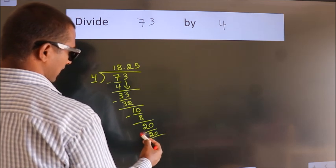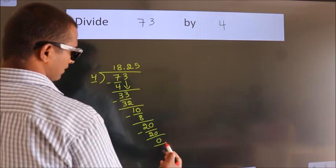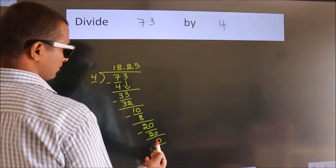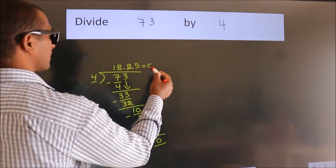Now we subtract and get 0. We got remainder 0, so this is our quotient.